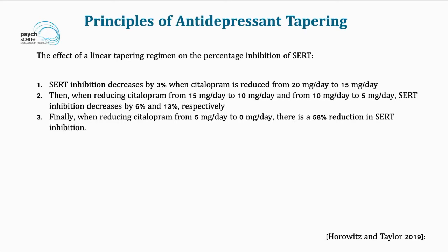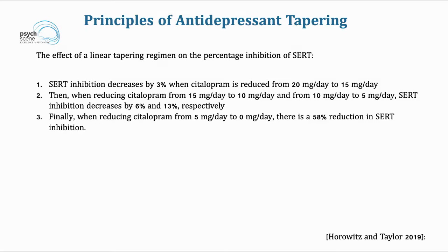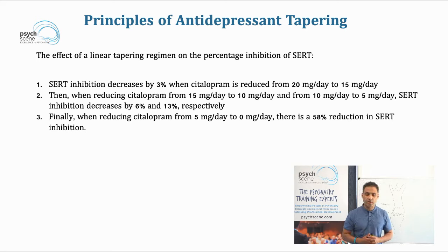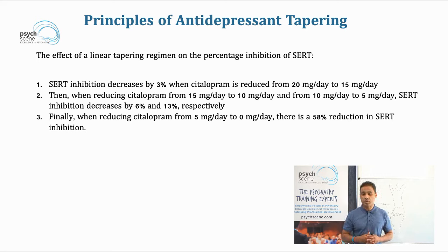What are the principles of antidepressant tapering? Looking at the effect of a linear tapering regime: if we simply go from escitalopram 40 mg down to 30, to 20, to 10, and stop — a linear approach — individuals may be susceptible to withdrawal symptoms. Using citalopram as an example, SERT inhibition decreases by only 3% when citalopram is reduced from 20 mg to 15 mg.